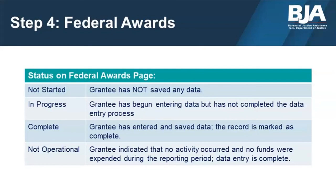For example, if a grantee has completed their portion of the PMT but their subrecipient's reporting is still in progress, the overall status shown on the Federal Awards page will say in progress. It is important that all grant recipients, both at the grantee and subrecipient level, complete their reports in a timely fashion. If you do not have any subrecipients, you can proceed with data entry as usual.